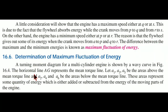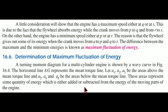The horizontal line AG represents the mean torque line. Let A1, A3, A5 be the areas above the mean torque line and A2, A4, A6 be the areas below the mean torque line. These areas represent some quantity of energy which is either added or subtracted from the energy of the moving parts of the engine.